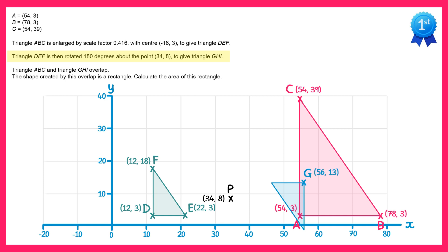Doing the same process for the other two points: E maps to H at (43,13), and C maps to I at (56, negative 2).